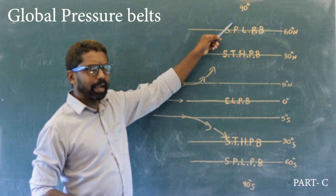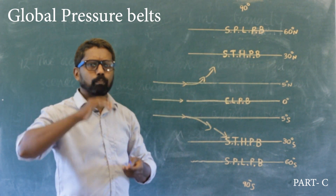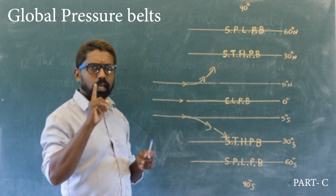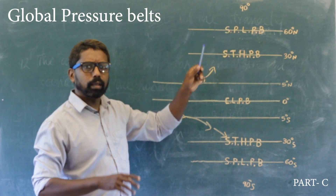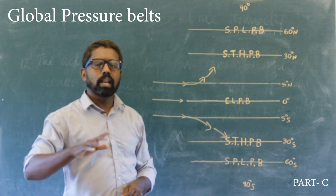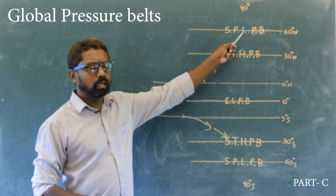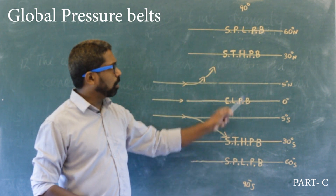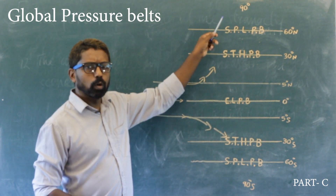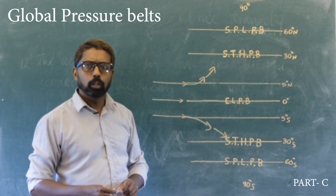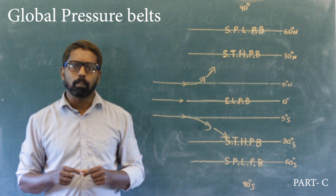Though the cold air remains close to the earth, the rotation of the earth causes air to be drawn away. As a result, low pressure is experienced along the sub-polar regions.